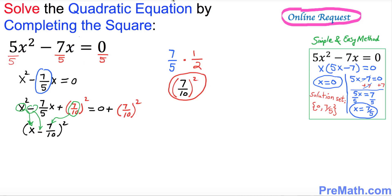So equals to, we got (7/10)². Now we want to solve for x, so we must remove this square.